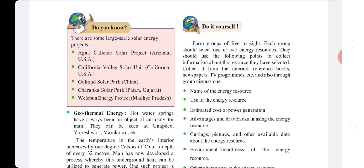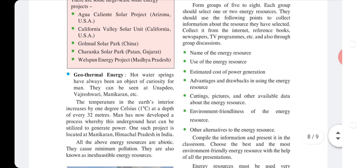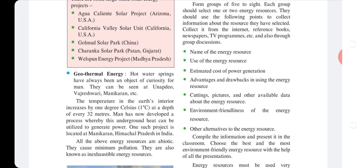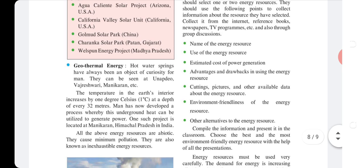Do it yourself: Form groups of 5 to 8. Each group should select one or two energy resources and collect information from the internet, reference books, newspapers, and TV programs. Cover the following points: name of the energy resource, its uses, estimated cost of power generation, advantages and drawbacks, pictures and available data, whether it is environment-friendly, and possible alternatives.